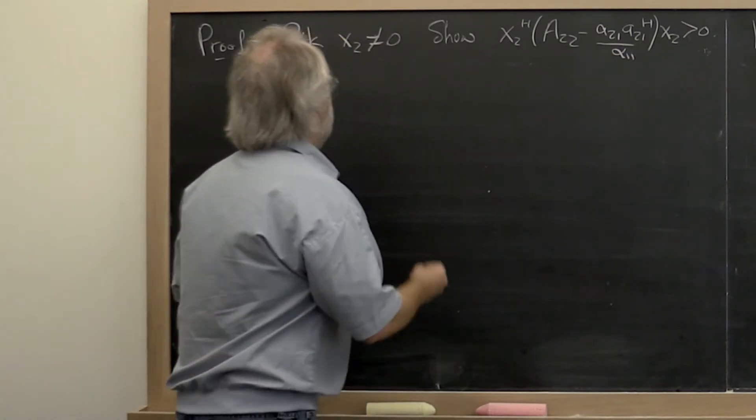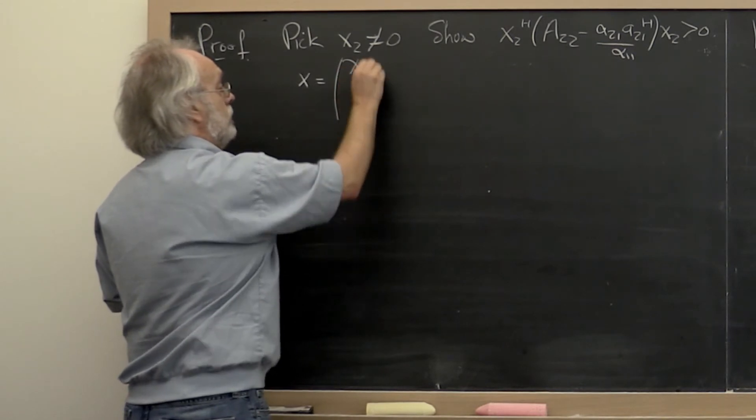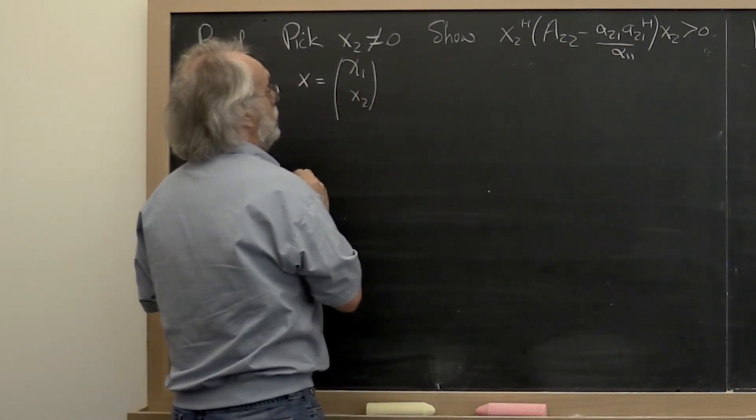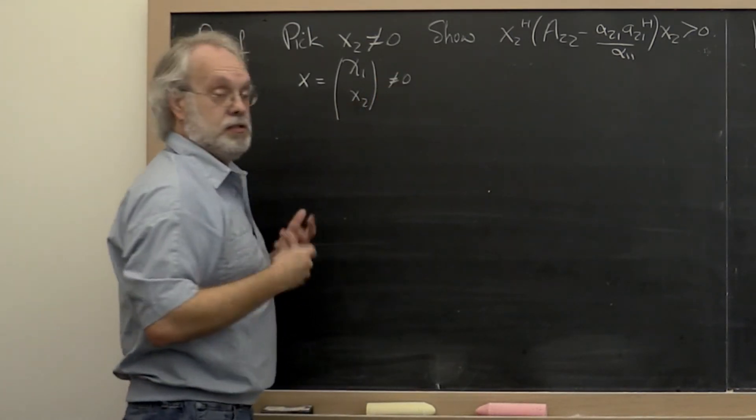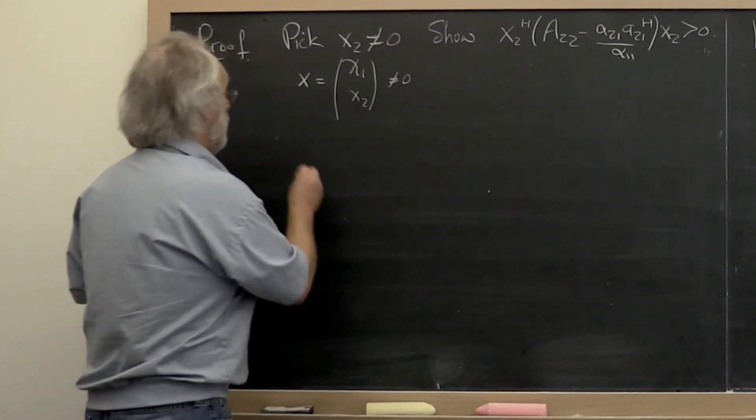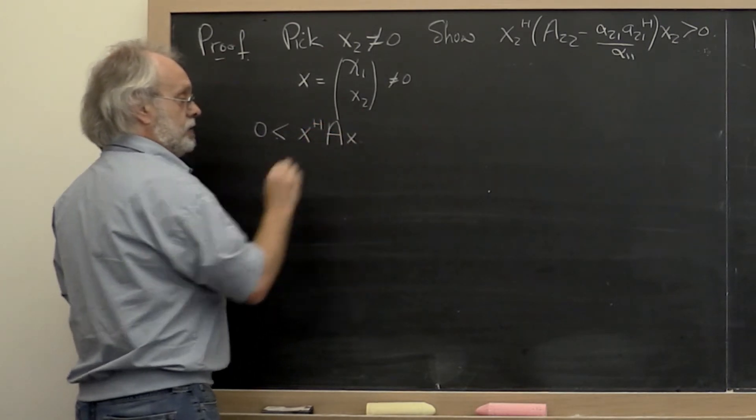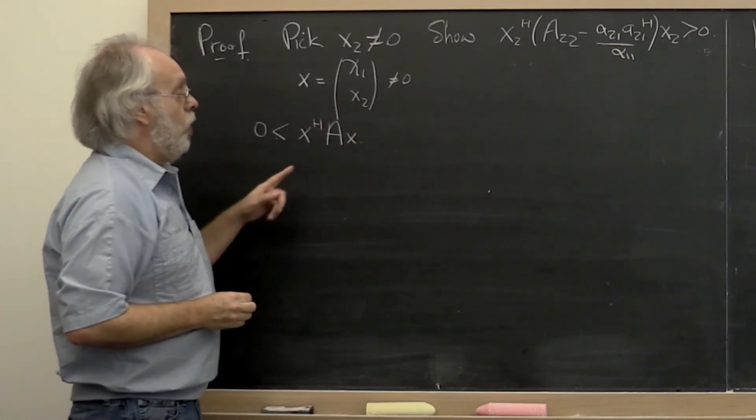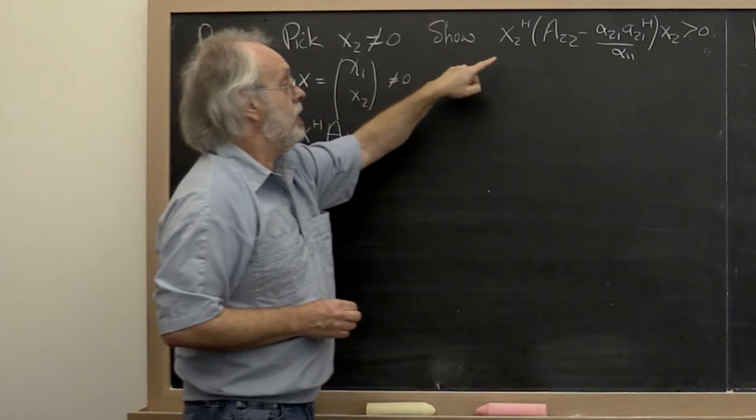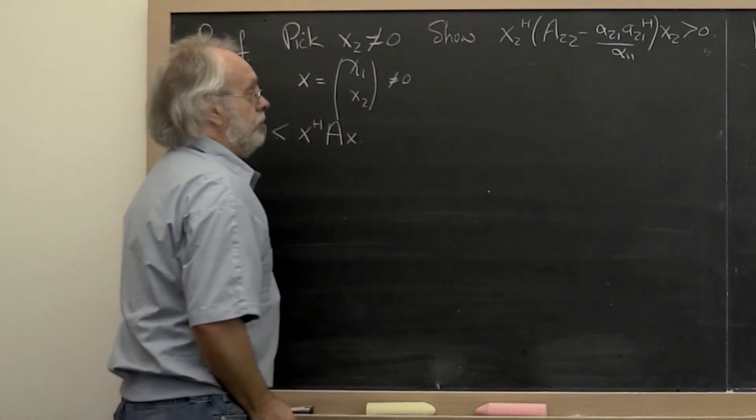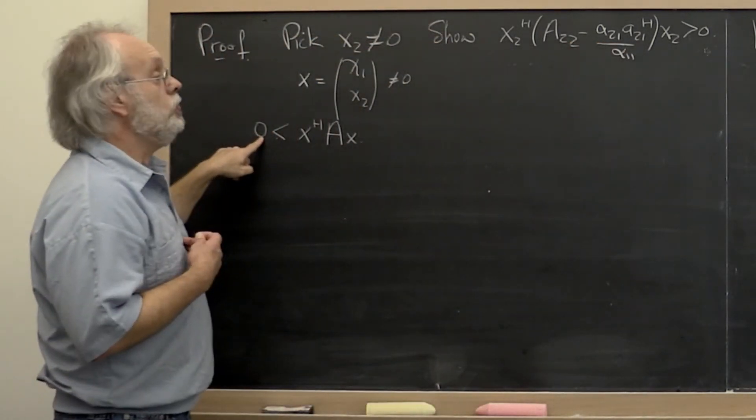Now the way we're going to do that is we're going to create a new vector x that is equal to chi 1, x2. We know that obviously this is not the zero vector because one of its parts is not the zero vector. And therefore we know that zero is less than x Hermitian transpose A x. Now what we want to do is we want to pick our chi 1 in such a way that when we work through all of this, this pops out so that we can conclude that it's greater than zero.